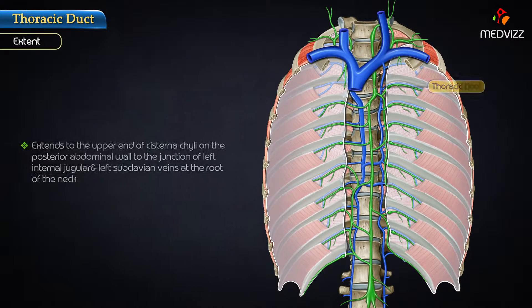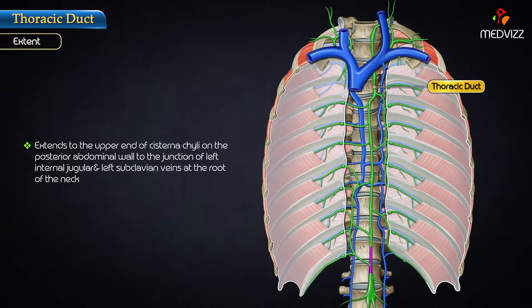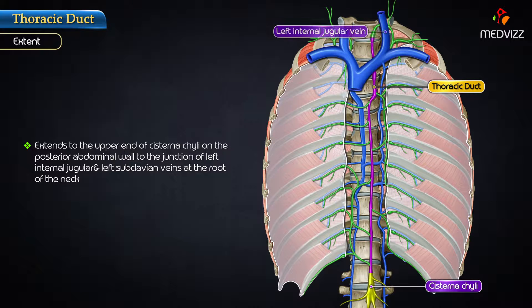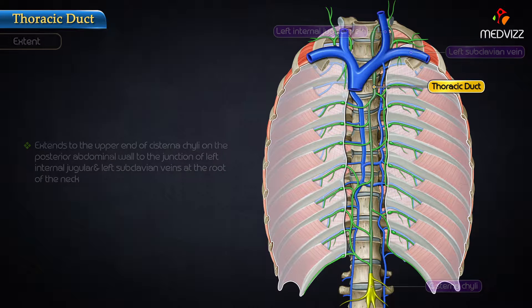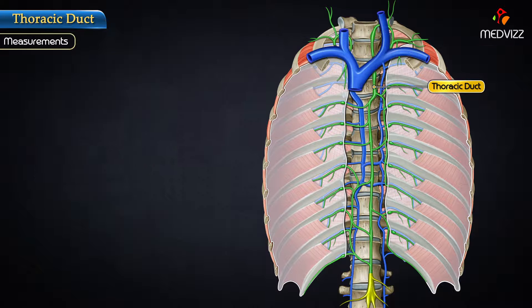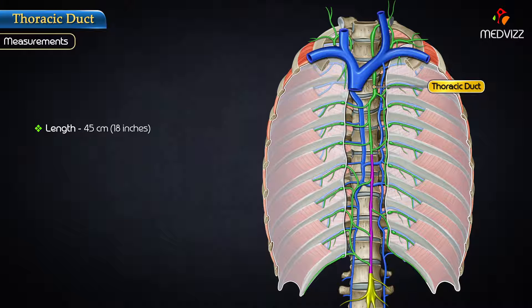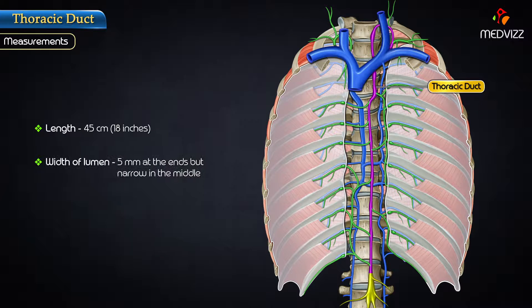Extent. The thoracic duct extends from the upper end of the cisterna chyli on the posterior abdominal wall till the junction between the left internal jugular and left subclavian veins at the root of the neck. Measurements: it is 45 centimeters in length, and the width of the lumen is around 5 millimeters.